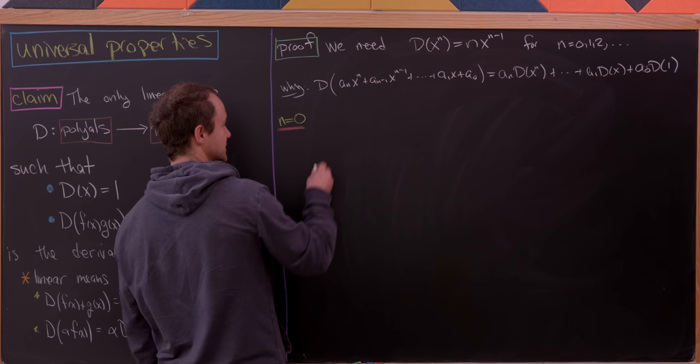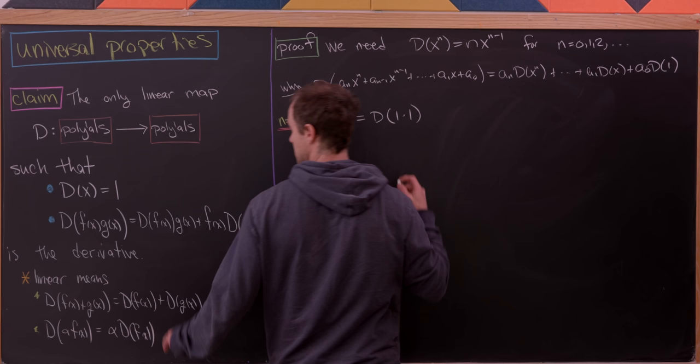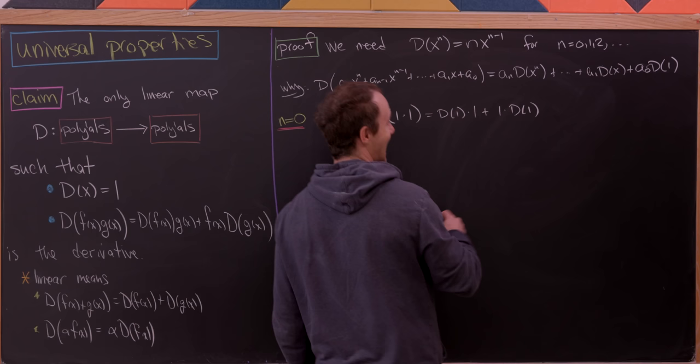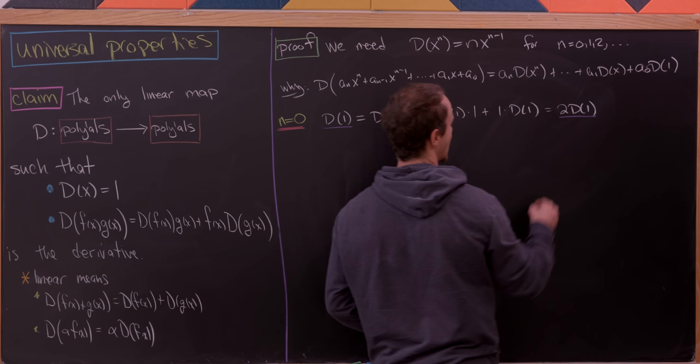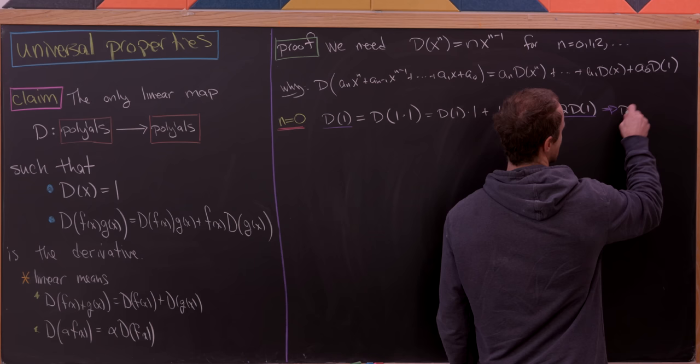For the n = 0 case: d(1) = d(1·1). Applying the Leibniz rule gives d(1)·1 + 1·d(1) = 2·d(1). So d(1) equals twice itself. The only number — or polynomial — equal to its own double is 0. Therefore d(1) = 0, which is the correct power rule result for x⁰.